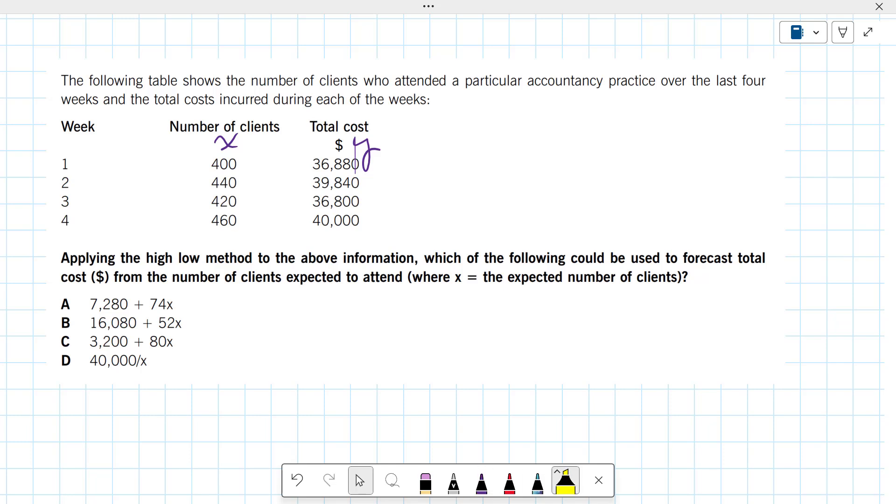And what do we need to help this business do? Well, we're going to use the high-low method with the above information, and which of the following equations could be used to forecast the total cost from the number of clients expected to attend, where X is the number of clients. So with this information, we would like to be able to predict a total cost based on the number of clients that we expect.